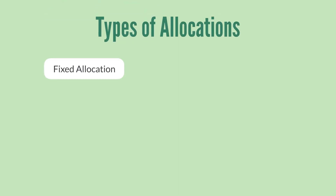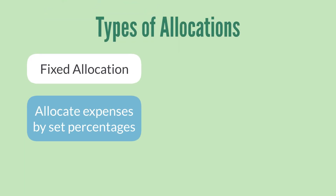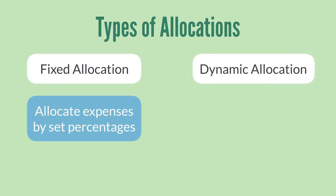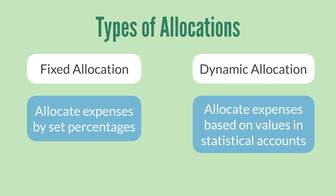To allocate expenses by set percentages, you would use a fixed allocation. Alternatively, you could use a dynamic allocation. A dynamic allocation allows you to tie the percentages of the allocation to values pulled from a statistical account, which is simply a non-monetary account.